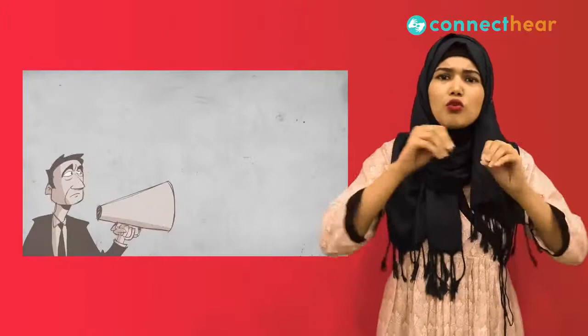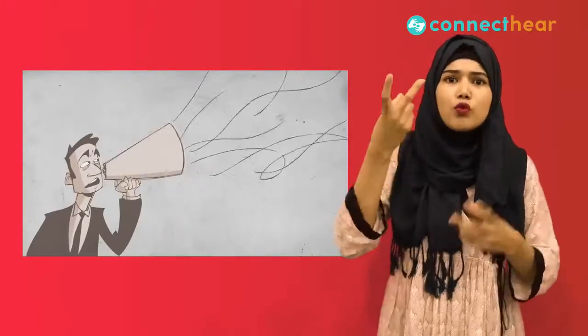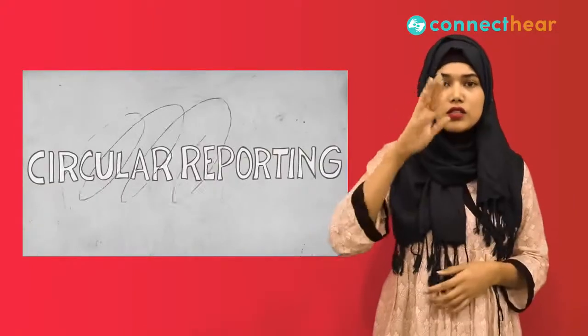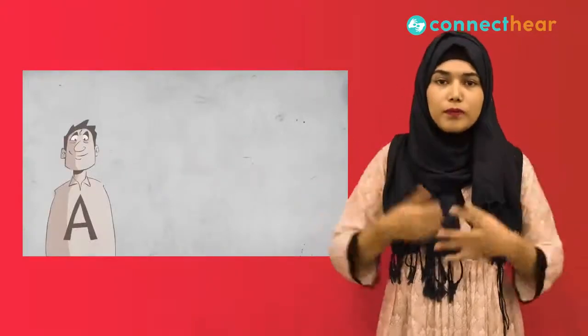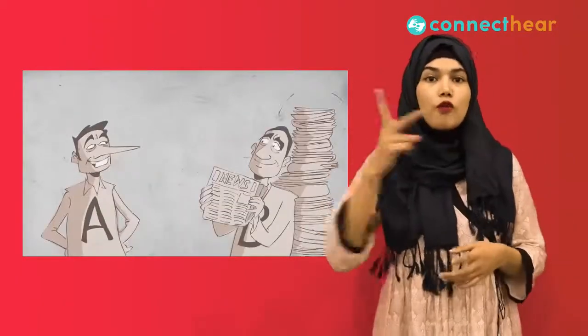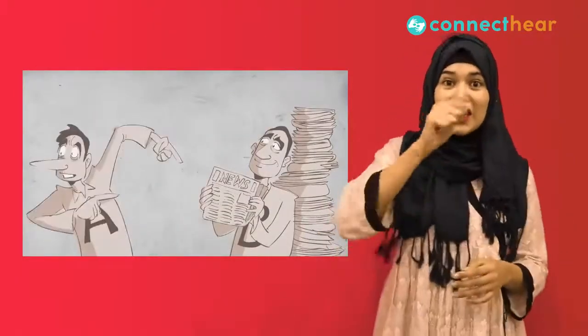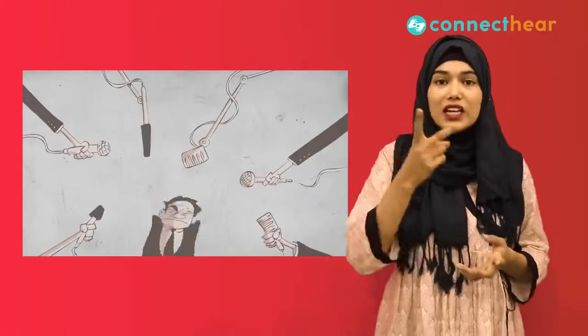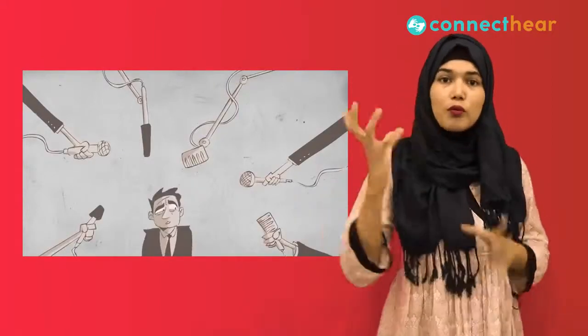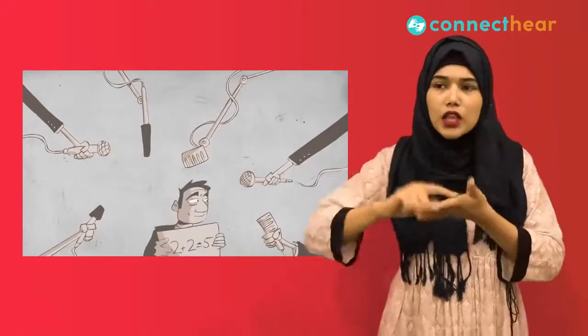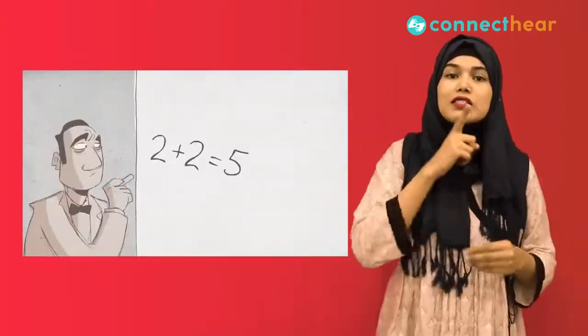The speed with which information spreads now has created the ideal conditions for a phenomenon known as circular reporting. This is when publication A publishes misinformation, publication B reprints it, and publication A then cites B as the source for the information. It's also considered a form of circular reporting when multiple publications report on the same initial piece of false information, which then appears to another author as having been verified by multiple sources.